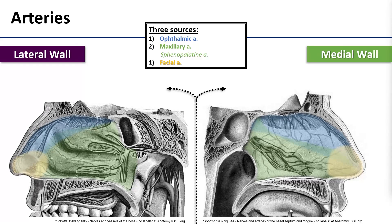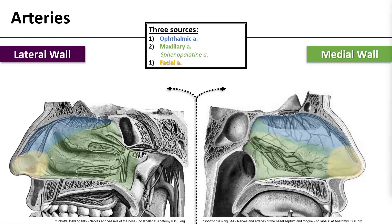We're going to start off talking about the arterial supply. The nasal cavity is sitting smack in the middle of the face and that is reflected in the neurovasculature that supplies it. We have three different sources that all converge on the nasal cavity to supply its walls: contributions superiorly from the ophthalmic artery, inferiorly from the maxillary artery, and anteriorly from the facial artery.